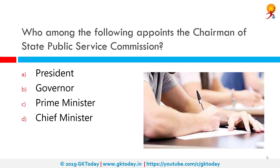Who among the following appoints the chairman of the State Public Service Commission? The correct answer is the Governor. A State Public Service Commission comprises a chairman and other members appointed by the Governor of the state. One of the appointed members of the commission should have held office for at least 10 years either under the Government of India or under the government of a state.